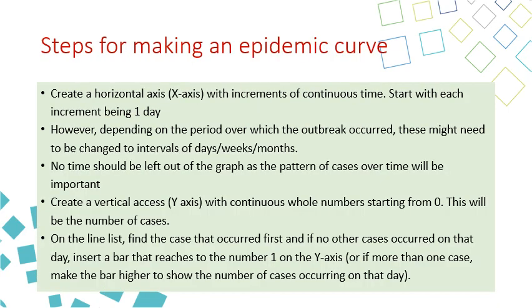This slide shows the steps for making an epidemic curve. You have a y-axis and x-axis. On the x-axis, you put the time. You start by 1, for example, or the actual date. Say the outbreak happened on March 15 — your first time point would be March 15, then March 16, 17, and so on. If the outbreak is for a long time with a large number of people, you can make it weekly.